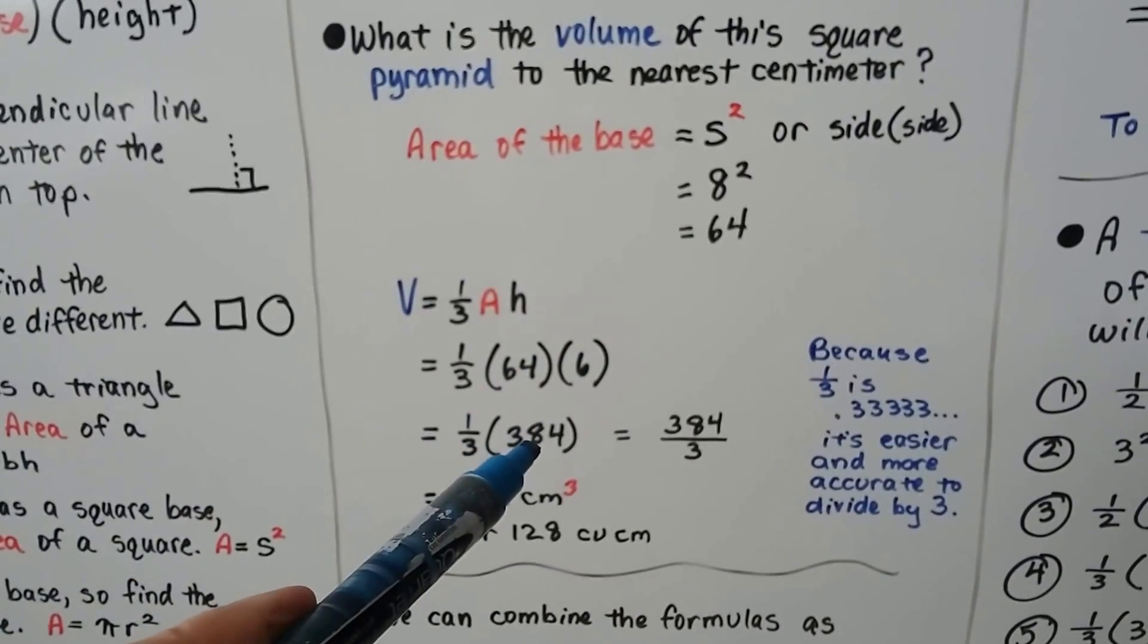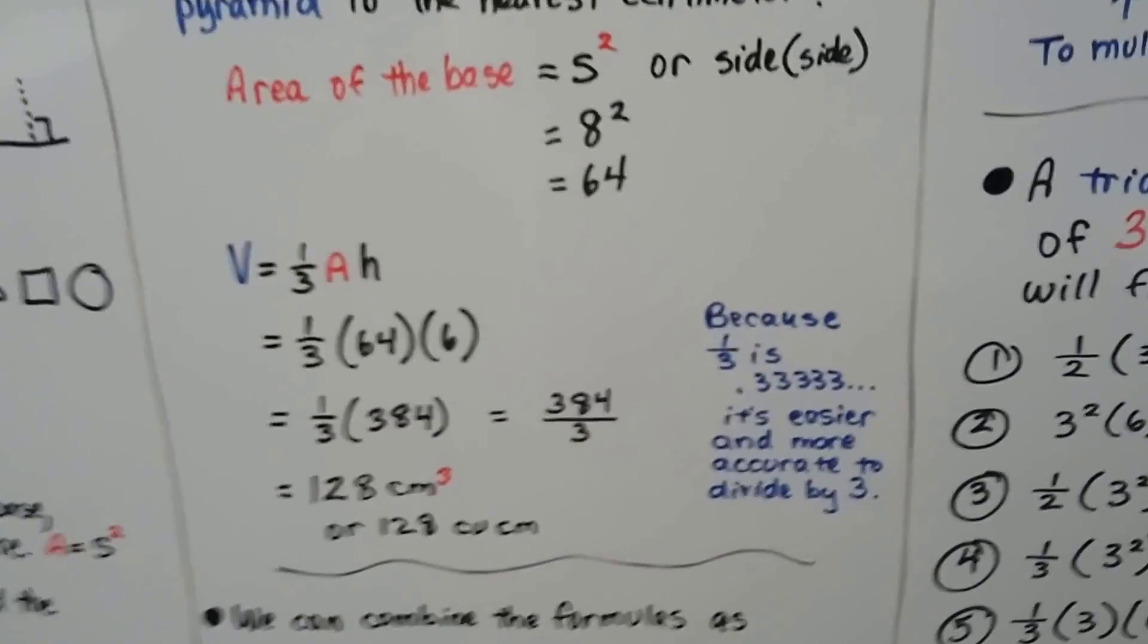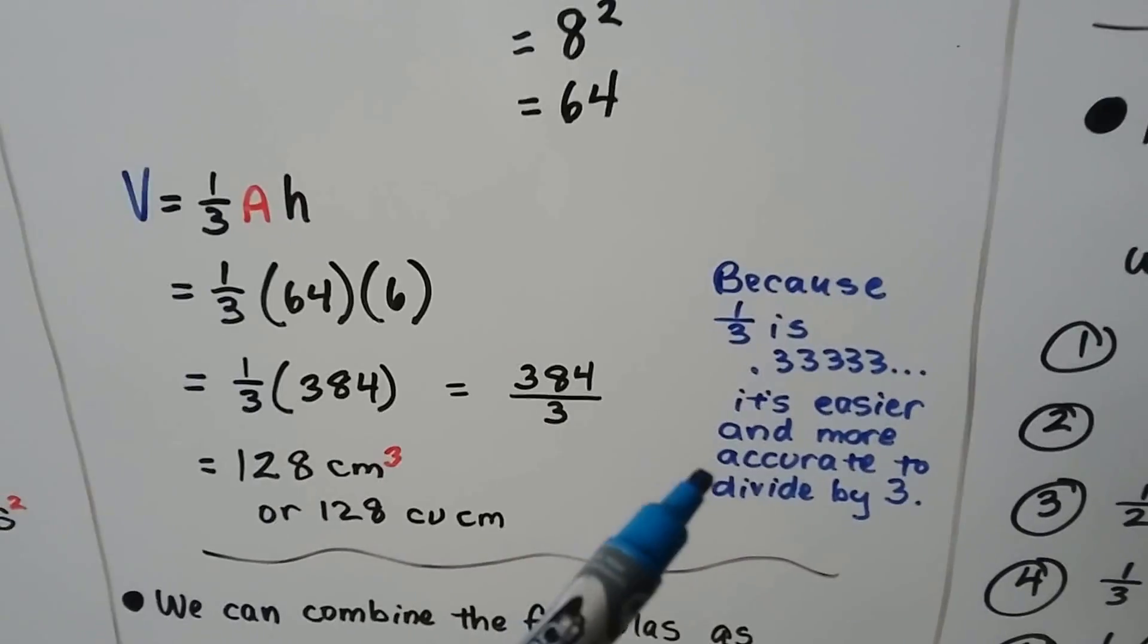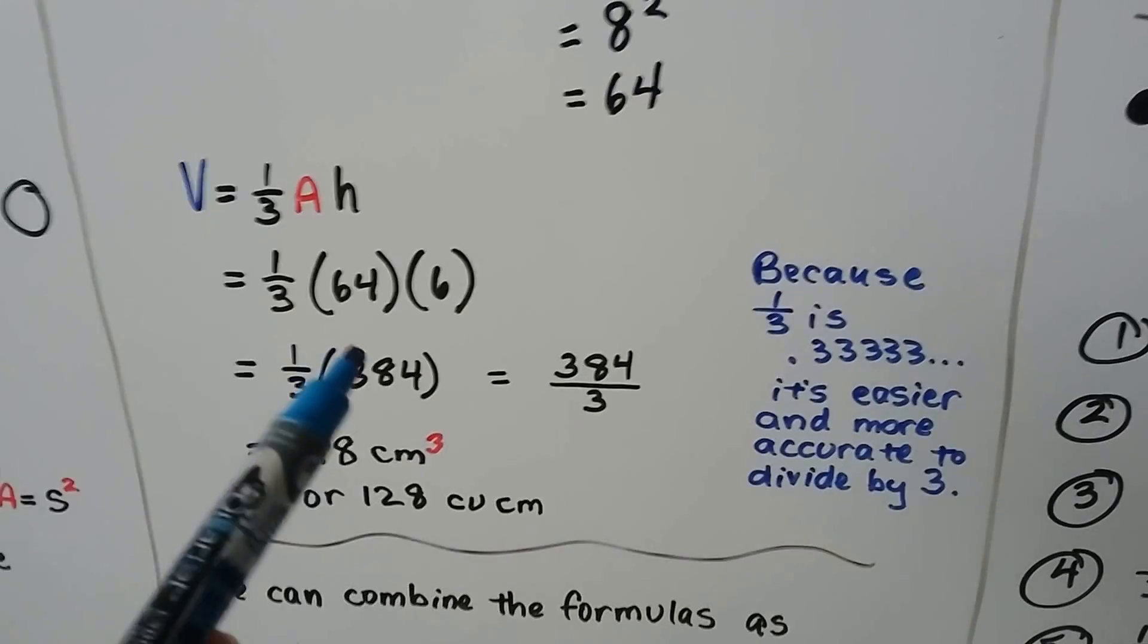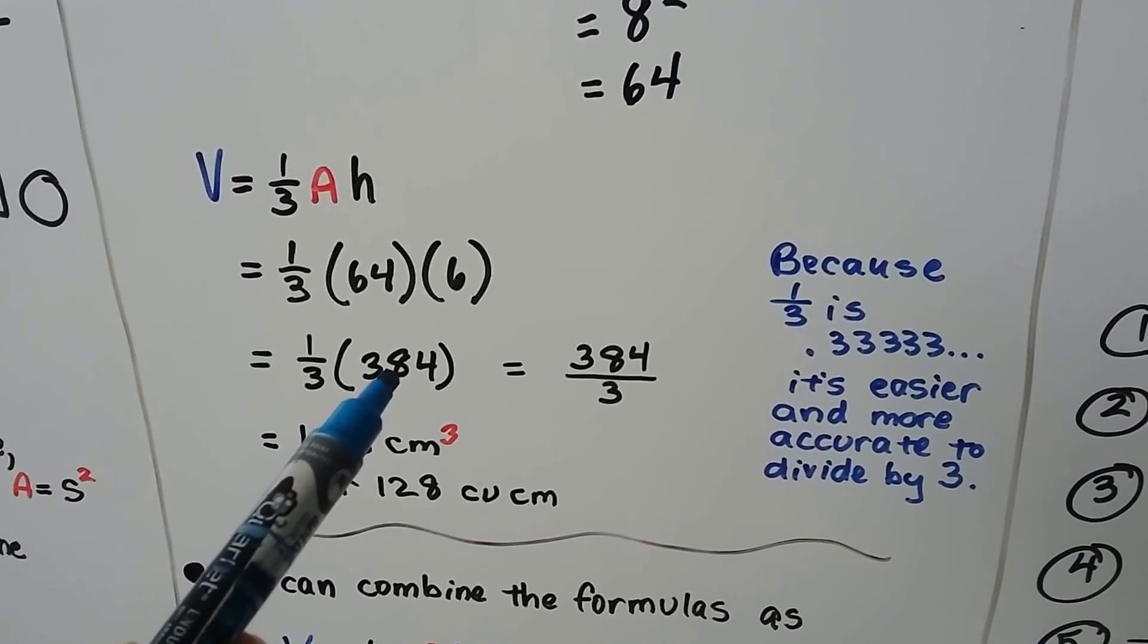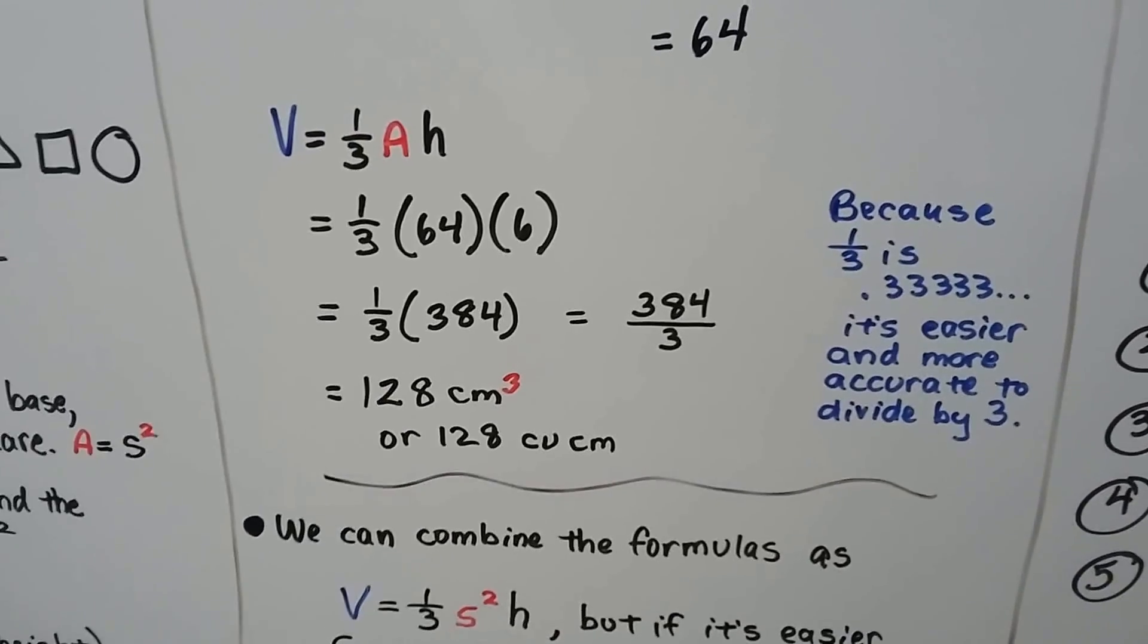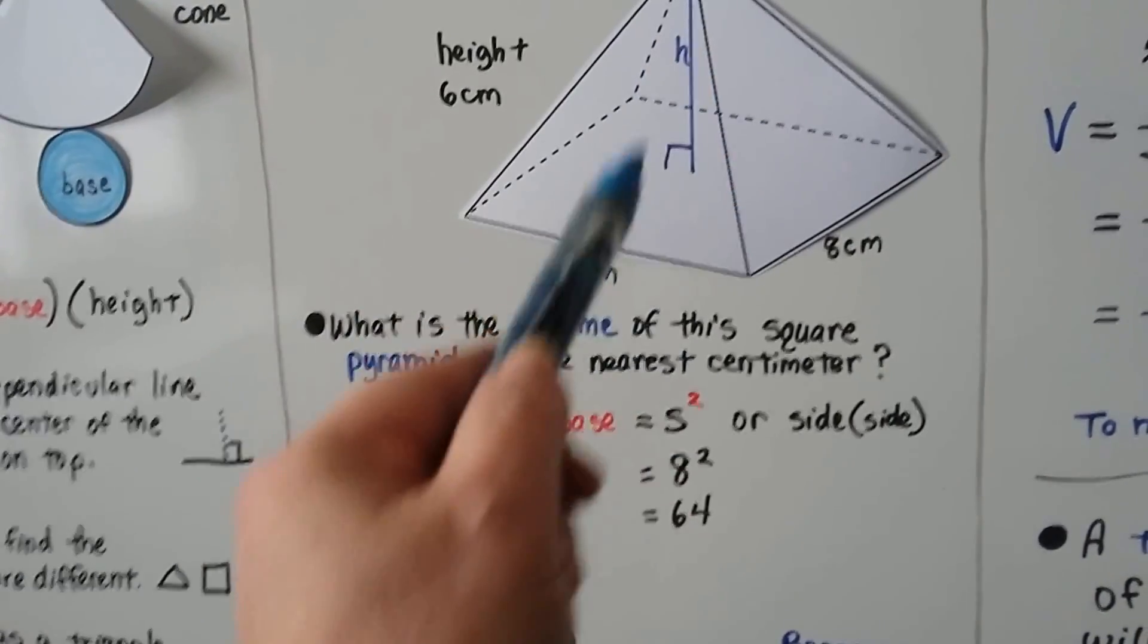We put that 64 in for where the a is supposed to be. We do 64 times six and get 384. And we divide it by three instead of multiplying it by a third, because with decimals, one third is .33333, and it keeps going on and on. So it's not very accurate for us to multiply. It's easier and more accurate for us to just divide this by three. When it says one third times something, that means they want a third of it. They want us to split this 384 into three parts, and they want one of the parts. So let's just divide it by three. It's easier, quicker. We'll get 128 centimeters cubed.